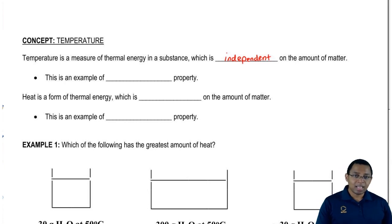We're going to say that this is an example of an intensive property. An intensive property is a property that is not based on the mass or volume of an object.